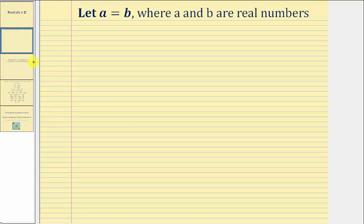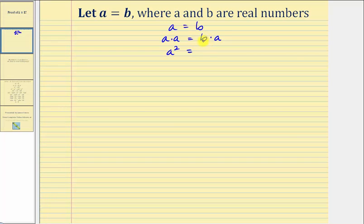We'll begin by letting A equal B, where A and B are real numbers. So we know A equals B. Let's go ahead and multiply both sides by A, so we'd have A times A equals B times A. Let's write A times A as A squared, and use the commutative property of multiplication to write B times A as A times B, or AB.